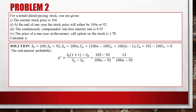The risk-neutral probability is P* = (S0 × (1 + R) − SD) / (SU − SD), which equals (105 − 92) / (100u − 92), which is 13 / (100u − 92).